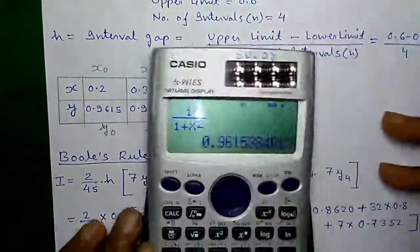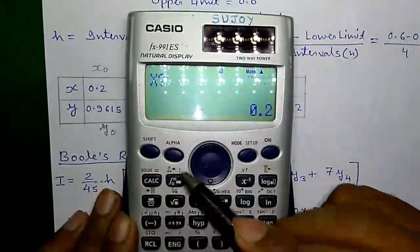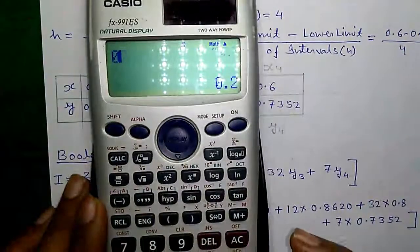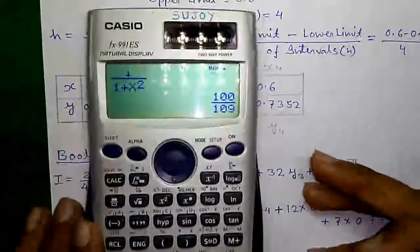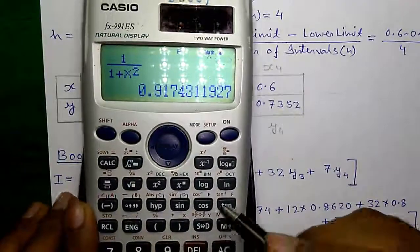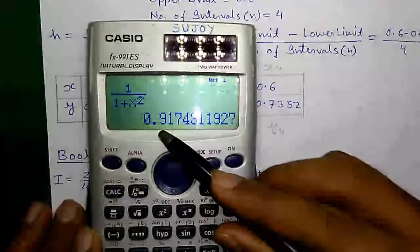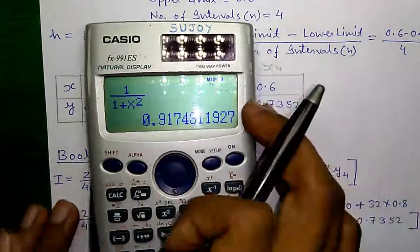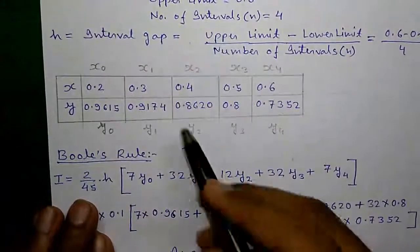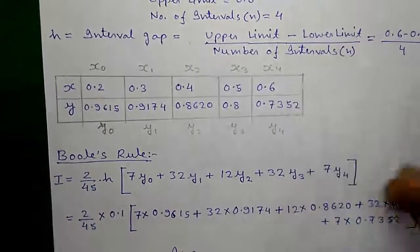Similarly, for x equals 0.3, press calc again, 0.3, and press equals: 0.9174, and so on up to the upper limit.